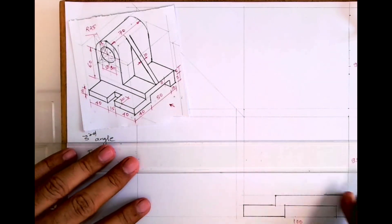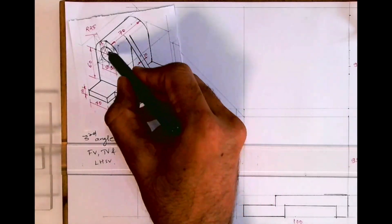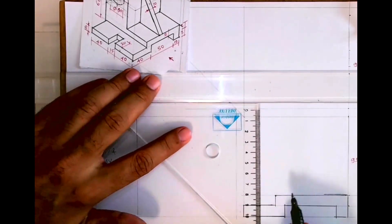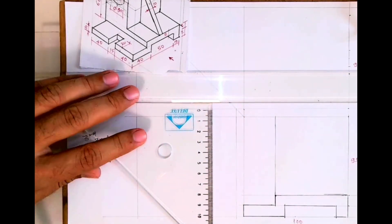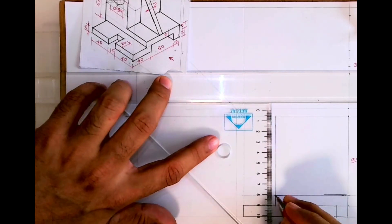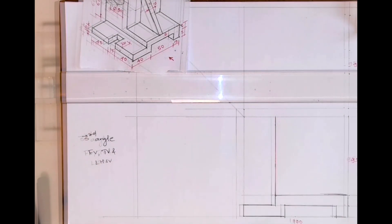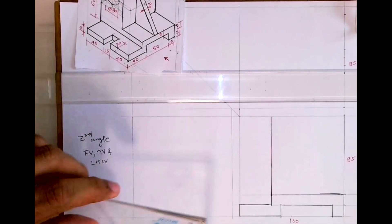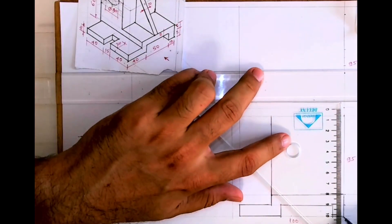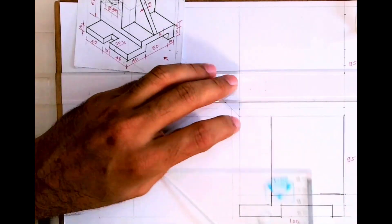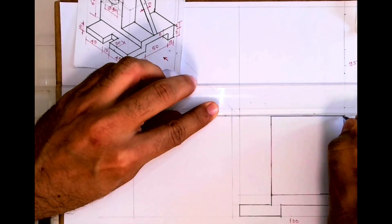So we are done with the lower portion. After that we'll see this part, it will be just a straight line. From here we'll draw horizontal line, so we are done with front view.